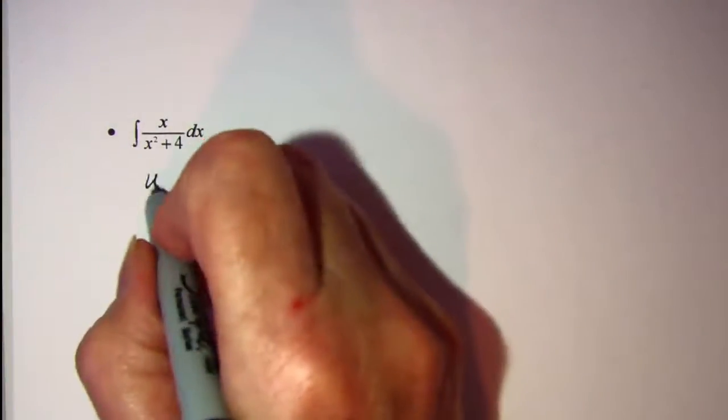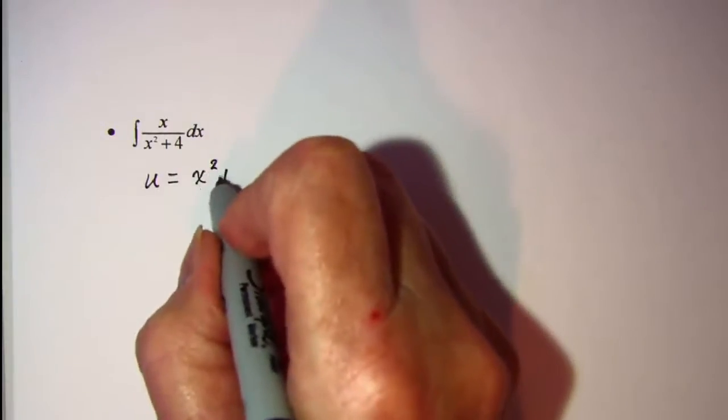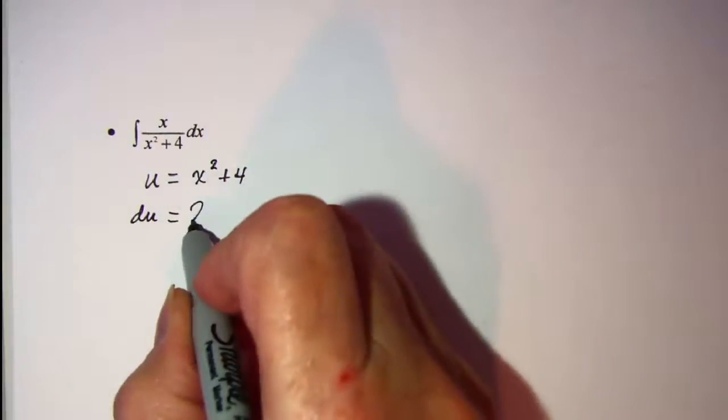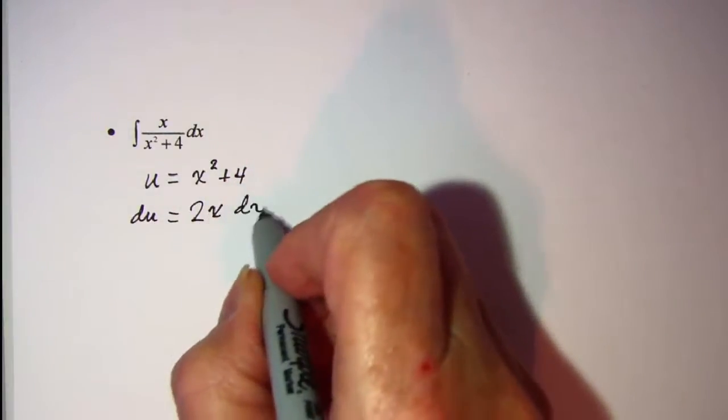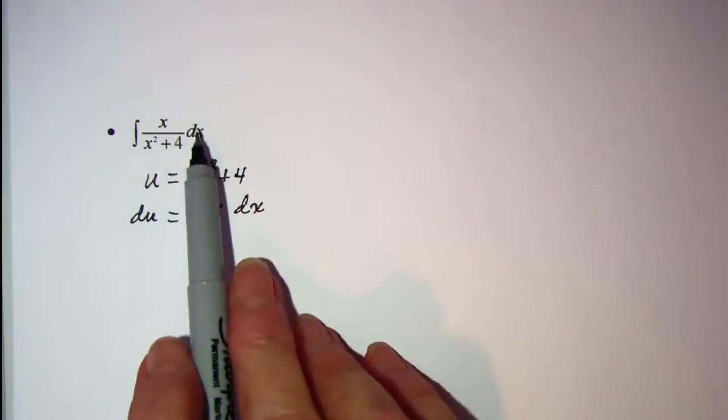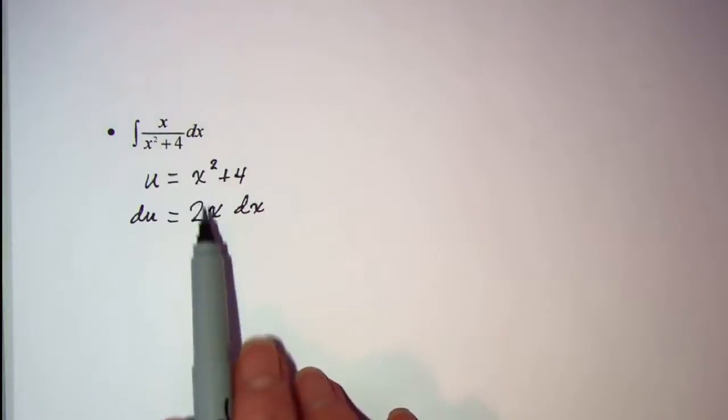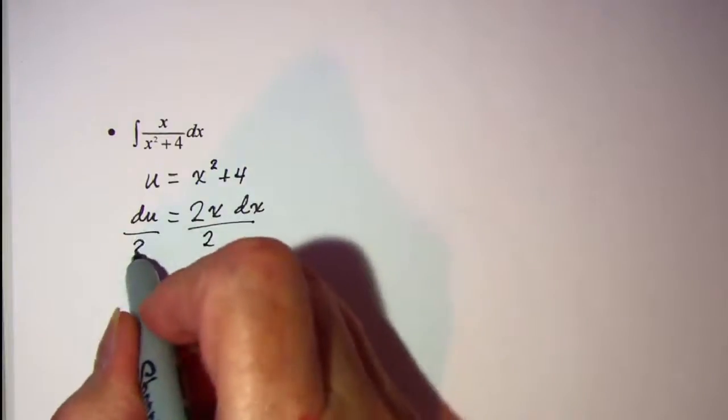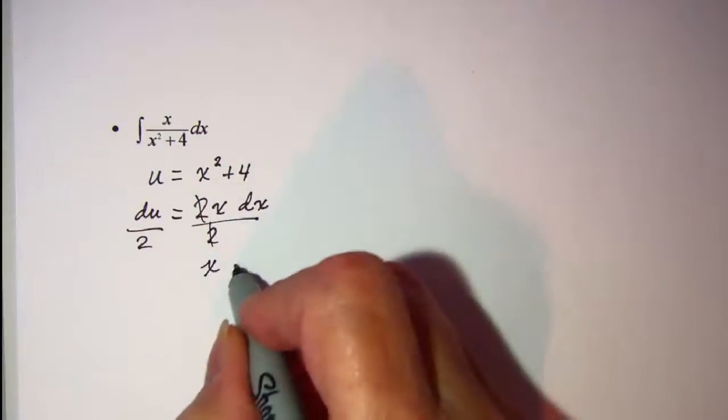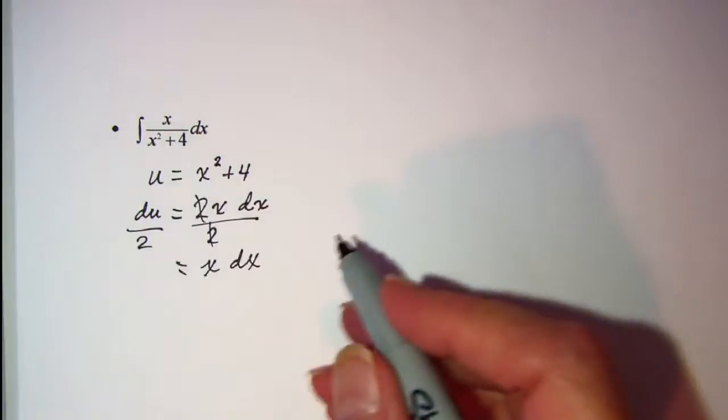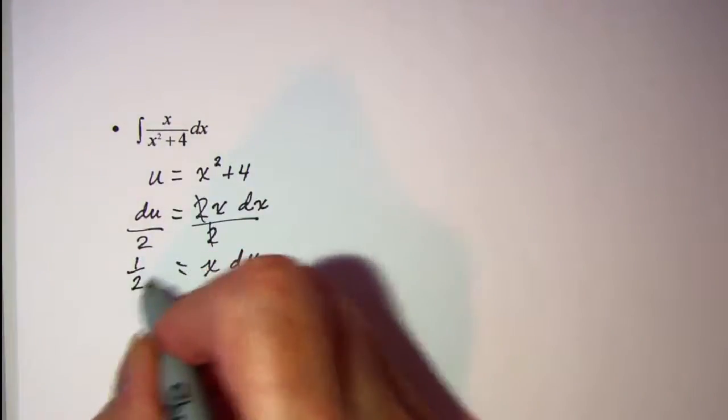Let's let u equal x squared plus 4. Then du is going to equal 2x dx. Now our problem has x and dx in it, but we don't have that 2, so we need to get that off of that right side. And we see then that x dx from my problem, I'll be able to substitute in 1 half du.